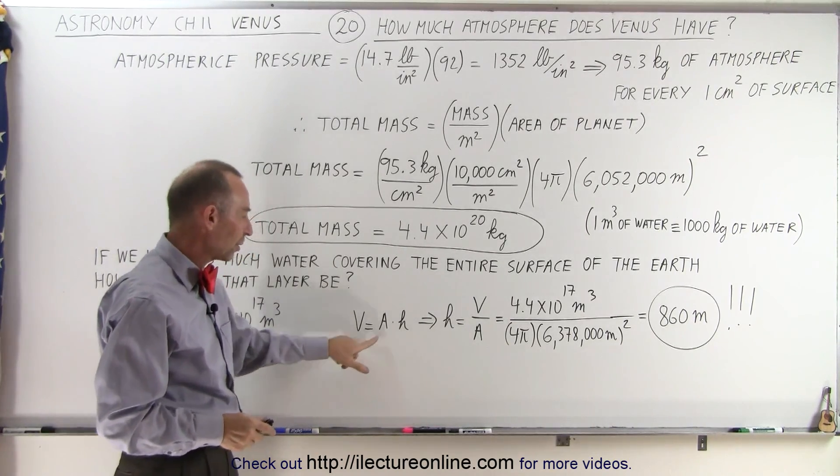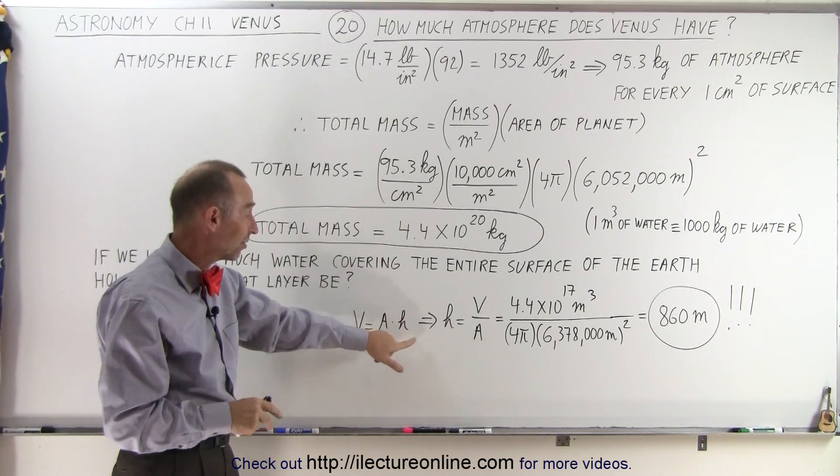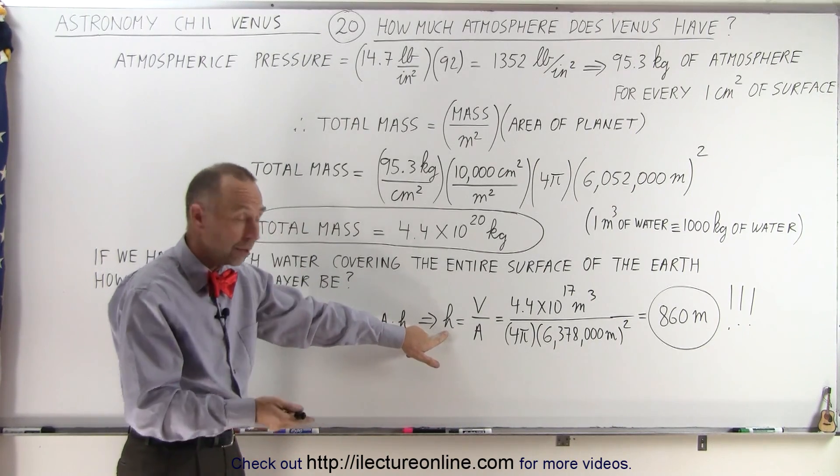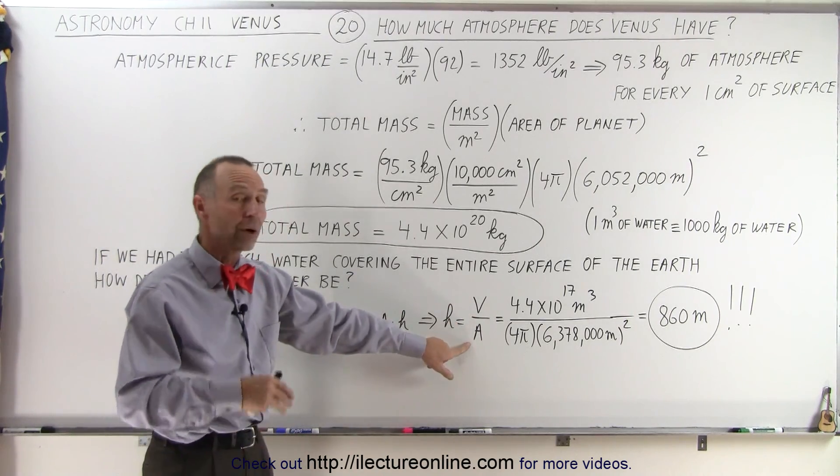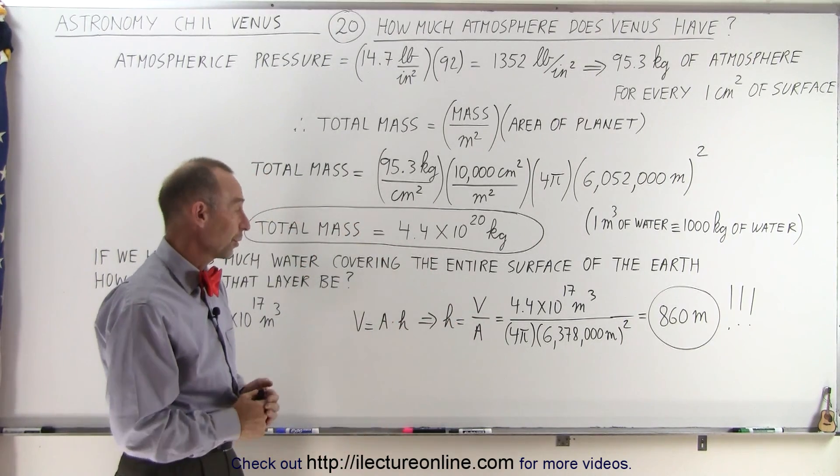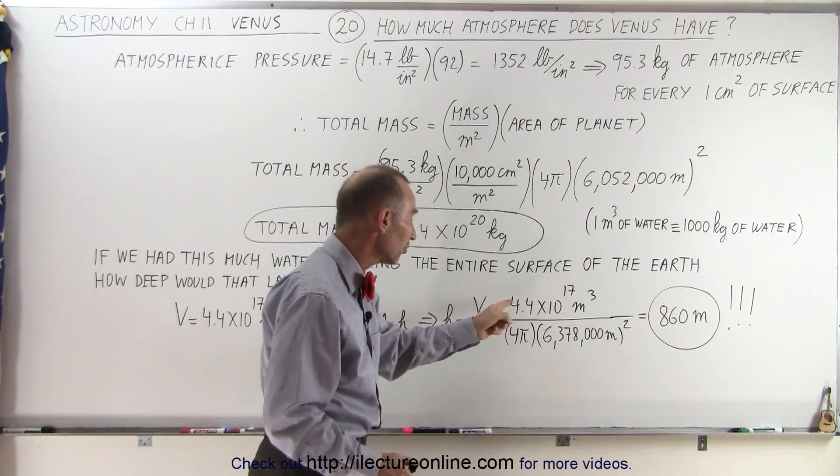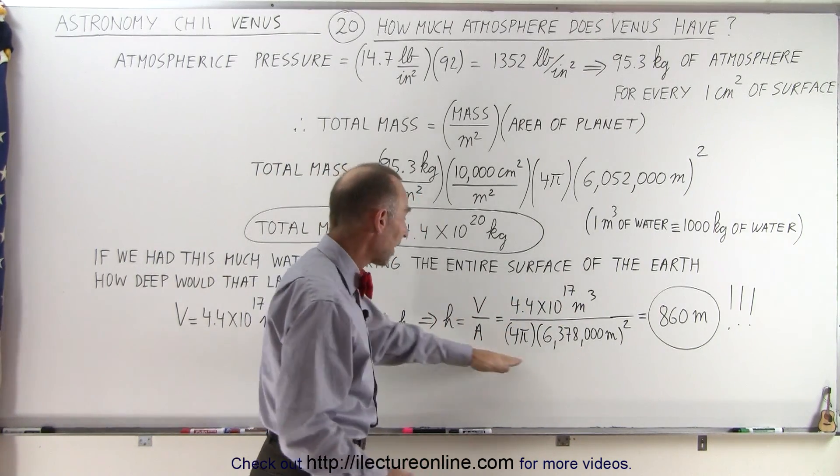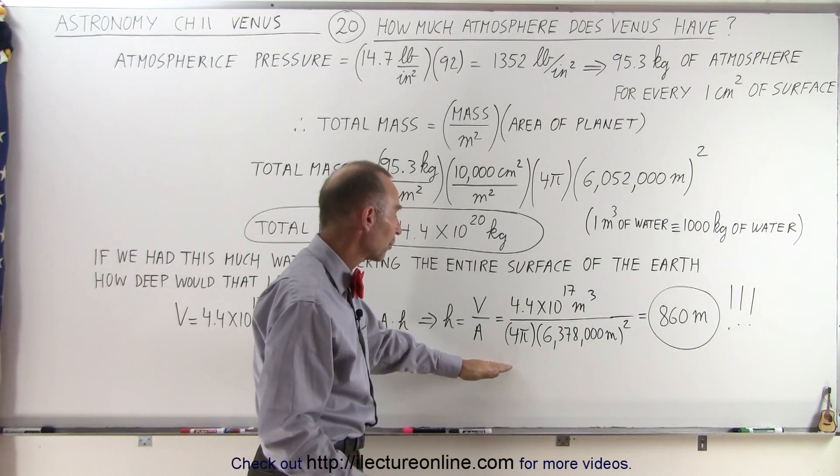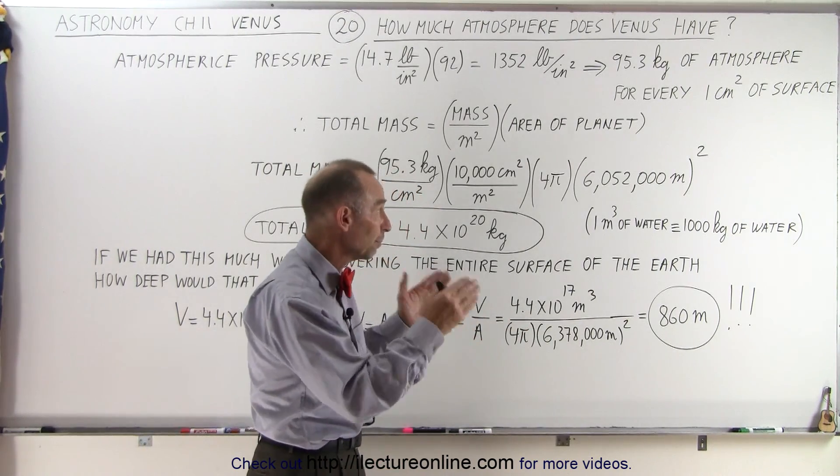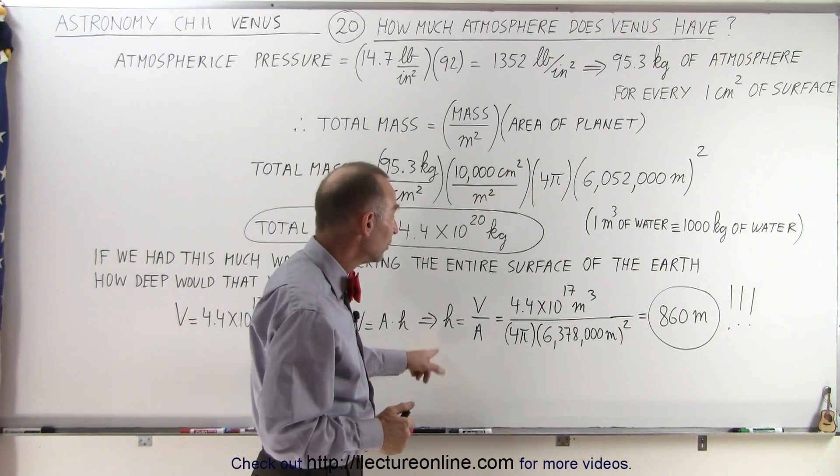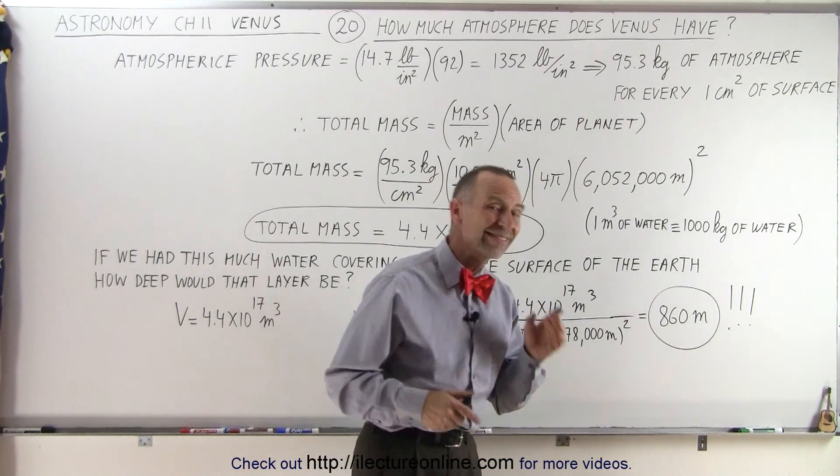Since the volume of something is equal to the cross-sectional area times the height, the height of that water on Earth would be equal to the volume divided by the surface area of the Earth. So in this case, we take the total volume in cubic meters that we got from here, divide by the surface area of the Earth, 4π times the radius squared. The radius of the Earth is a little bit bigger than the radius of Venus, and notice: 860 meters.